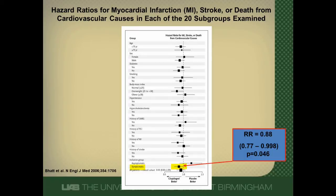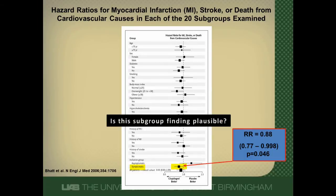So what do you think? Do you believe this subgroup analysis? Is this subgroup finding plausible? Does it make sense that the symptomatic group gained more benefit and all the other subgroups didn't? What if I told you there was no adjustment for multiple comparisons? This is what the authors wrote in the statistical analysis section. Do you still believe this subgroup effect?